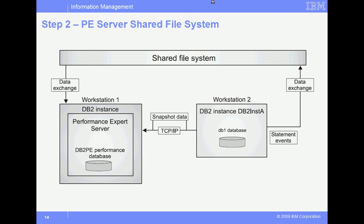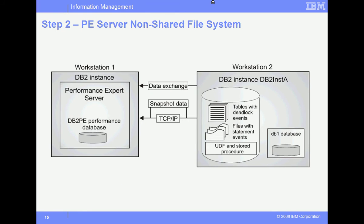In order to collect the data, Performance Expert Server makes a connection to the monitored server and instance, runs all required snapshots, then disconnects. In addition, data is also exchanged by collecting event monitor events from the collection repositories on the monitored server. PE can collect these event monitor events from either a shared file system or by a file system repository on the monitored server. This example shows a shared file system. In the next example, event monitors are collected by data exchange with the monitored server as opposed to a file system.